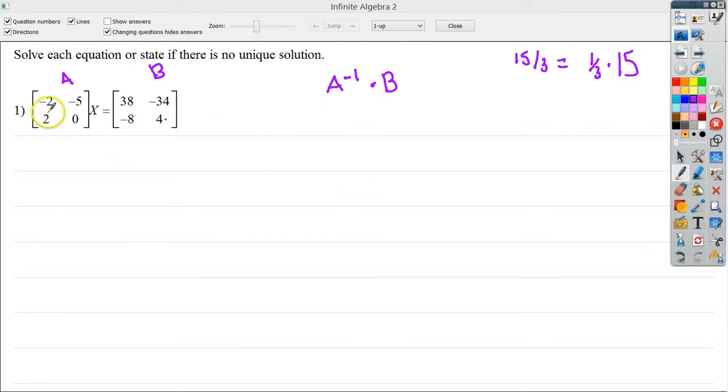From here I need to find my inverse, so I need to do my determinant, which would be negative 2 times 0, then subtract negative 5 times 2. So essentially what I end up with is 0 plus 10. So my determinant value is 10.